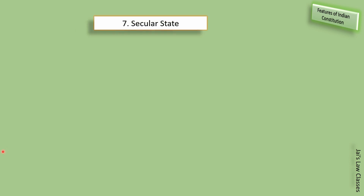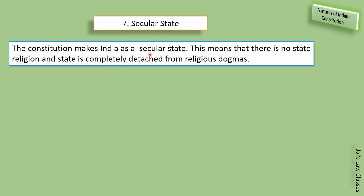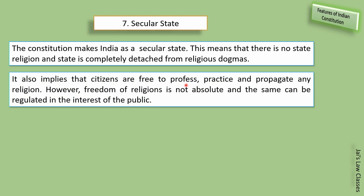Seventh feature of Indian Constitution is that it is a secular state. The constitution makes India a secular state — there is no state religion and the state is completely detached from religious dogmas. Hamara constitution kisi ek dharm ke liye nahi hai aur koi bhi state religious basis pe nahi bana hai. Citizens are free to profess, practice, and propagate any religion.